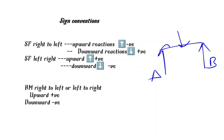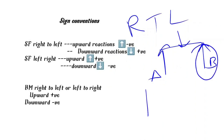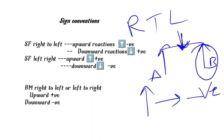For sign conventions, we consider right to left. When analyzing from the right side: an upward reaction is negative (minus sign). A downward reaction is positive. From the left side: an upward reaction is positive, a downward reaction is negative.